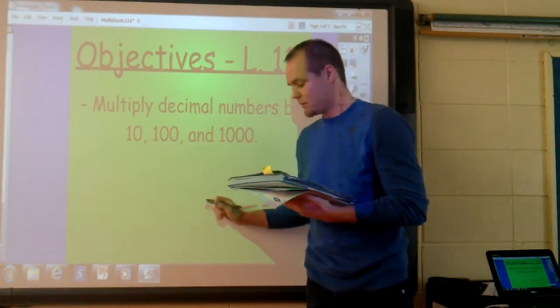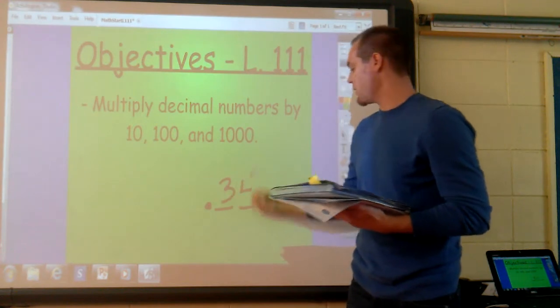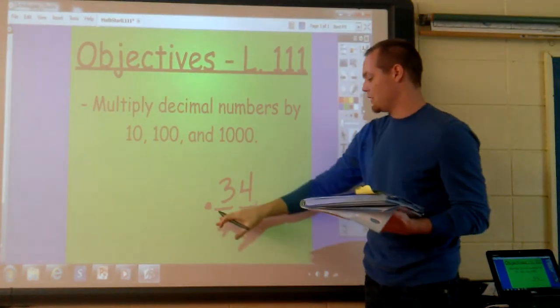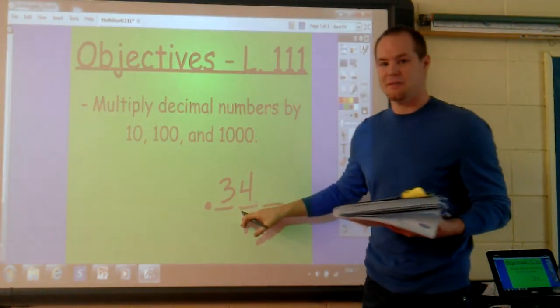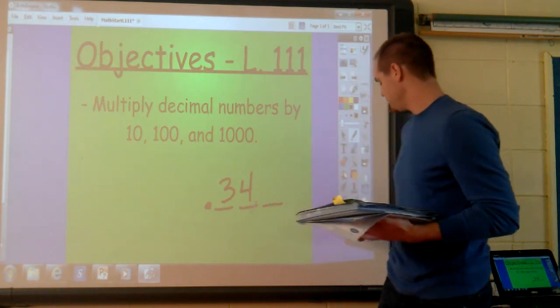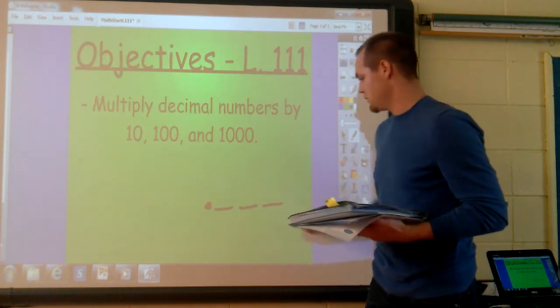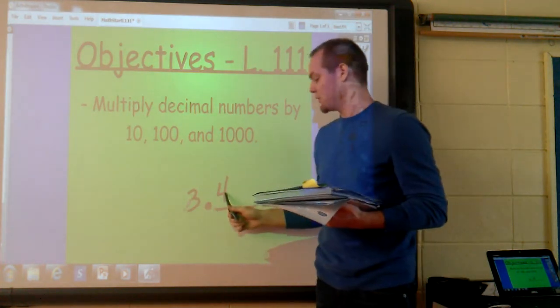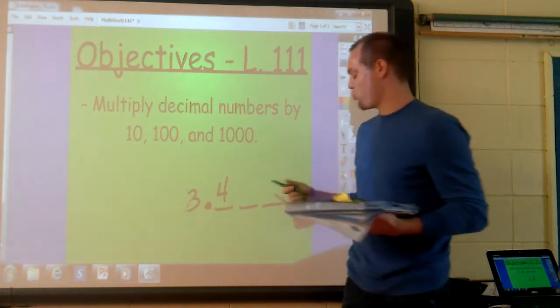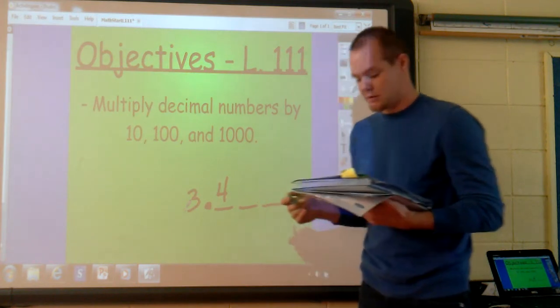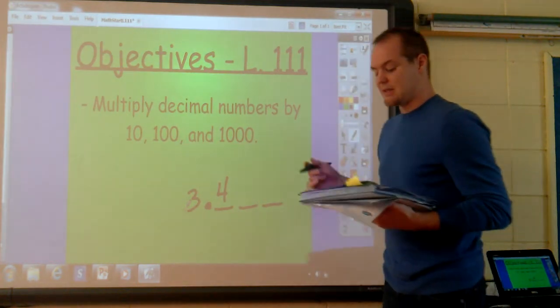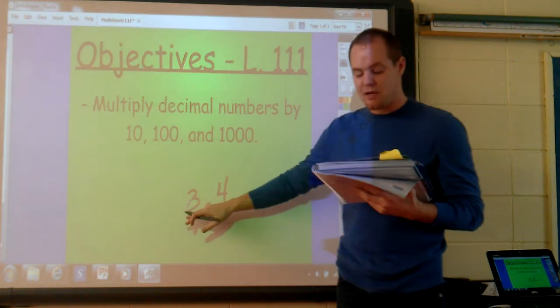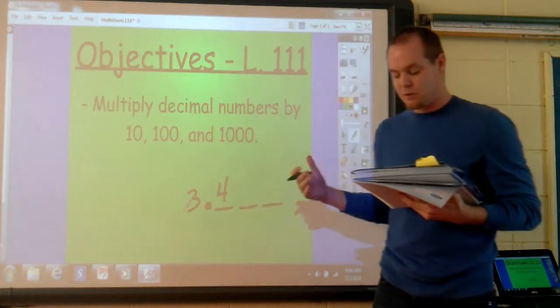The same applies for numbers that are in decimal places. If you have the number 34 hundredths and you multiply it by 10, the digits just shift one unit to the left. So it becomes 3 and 4 tenths instead of 34 hundredths. We see that the digit 3 moved to the other side of the decimal point when it shifted one place to the left.